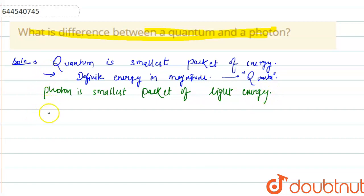Photon is also a quantum. Quanta is the singular form of quantum. So photon is also a quanta.